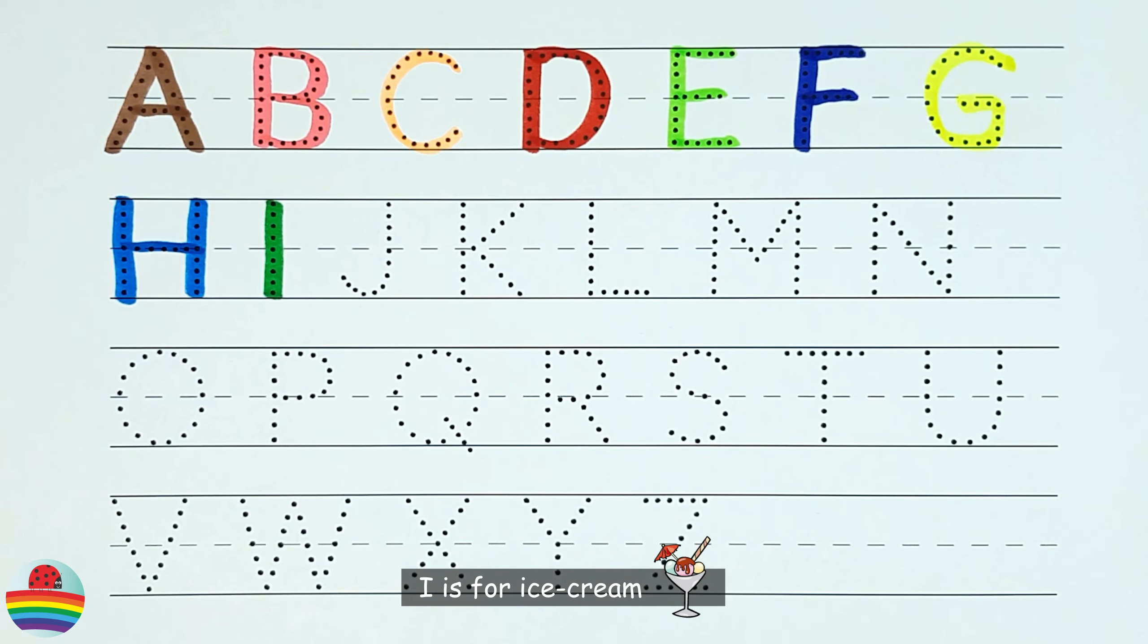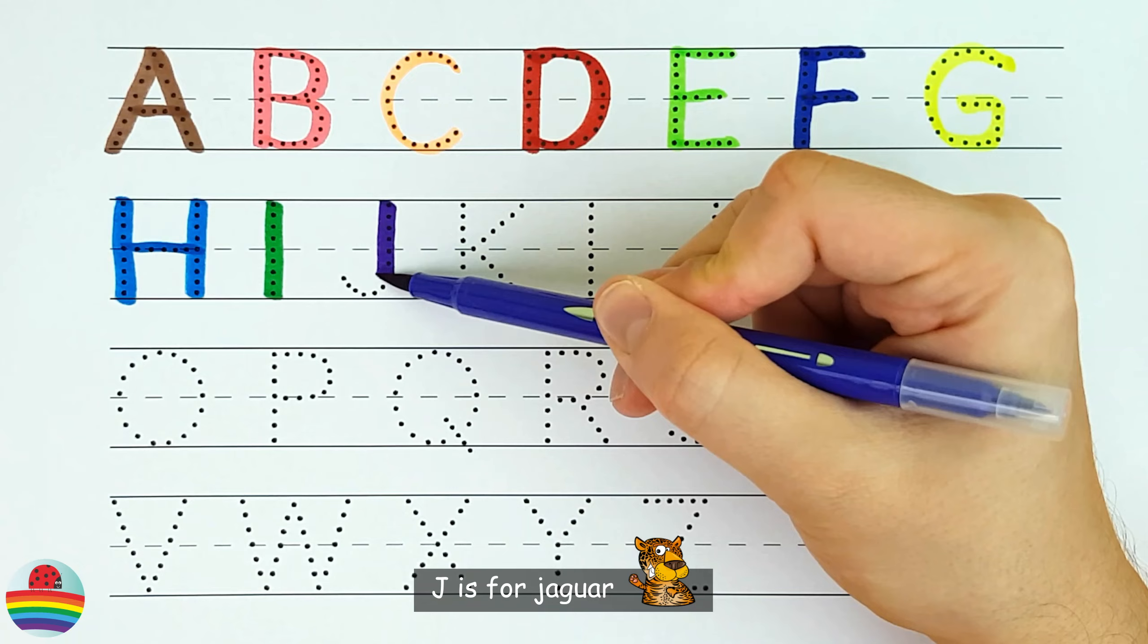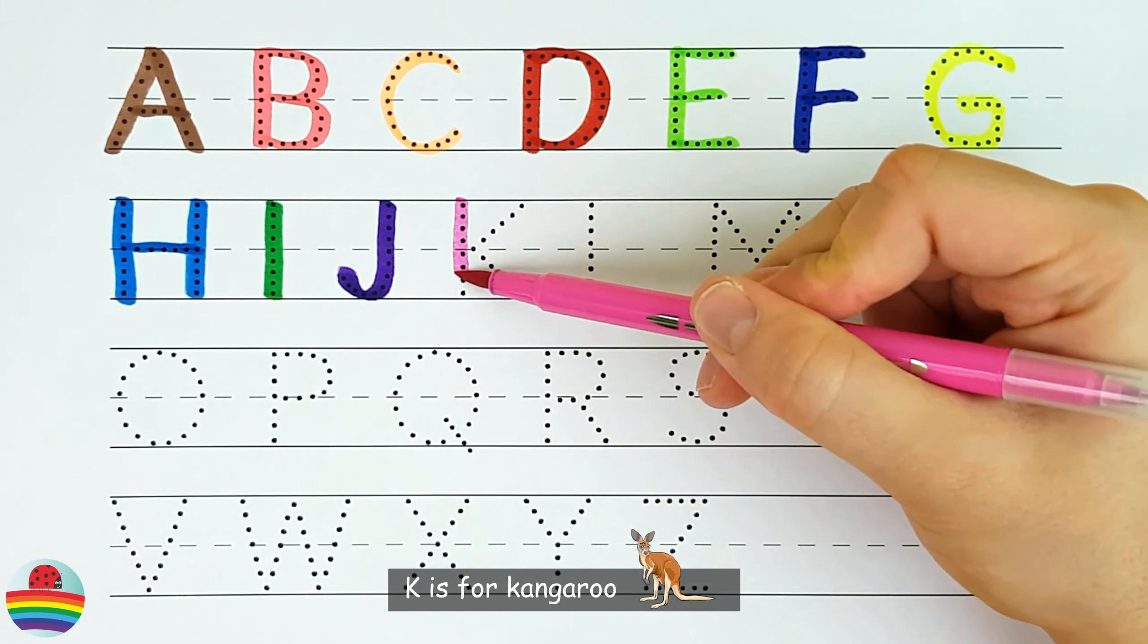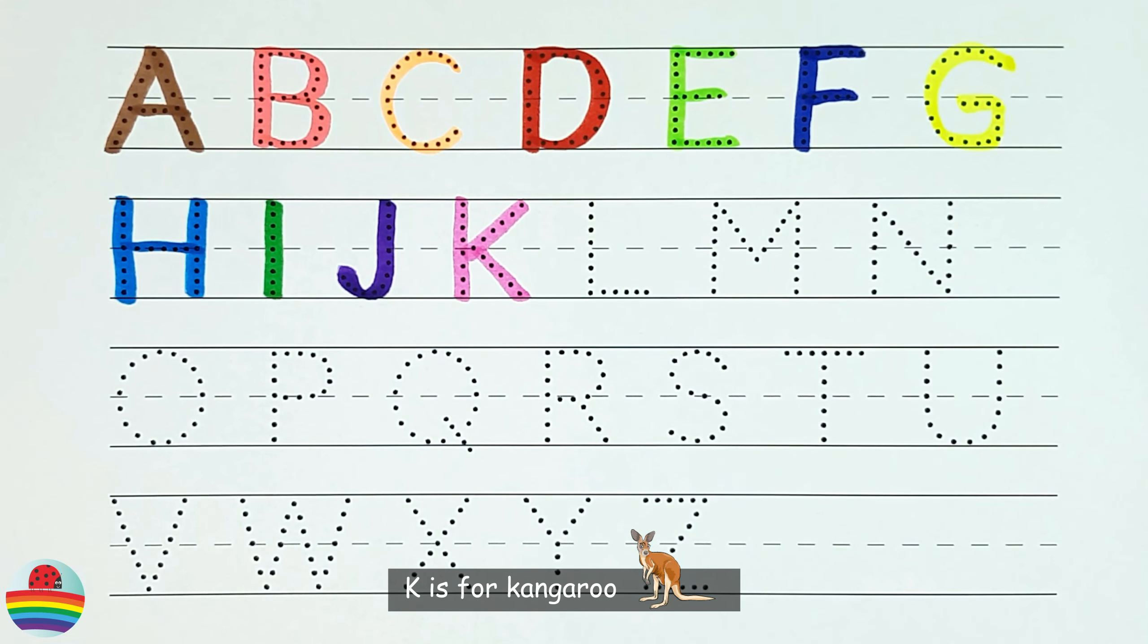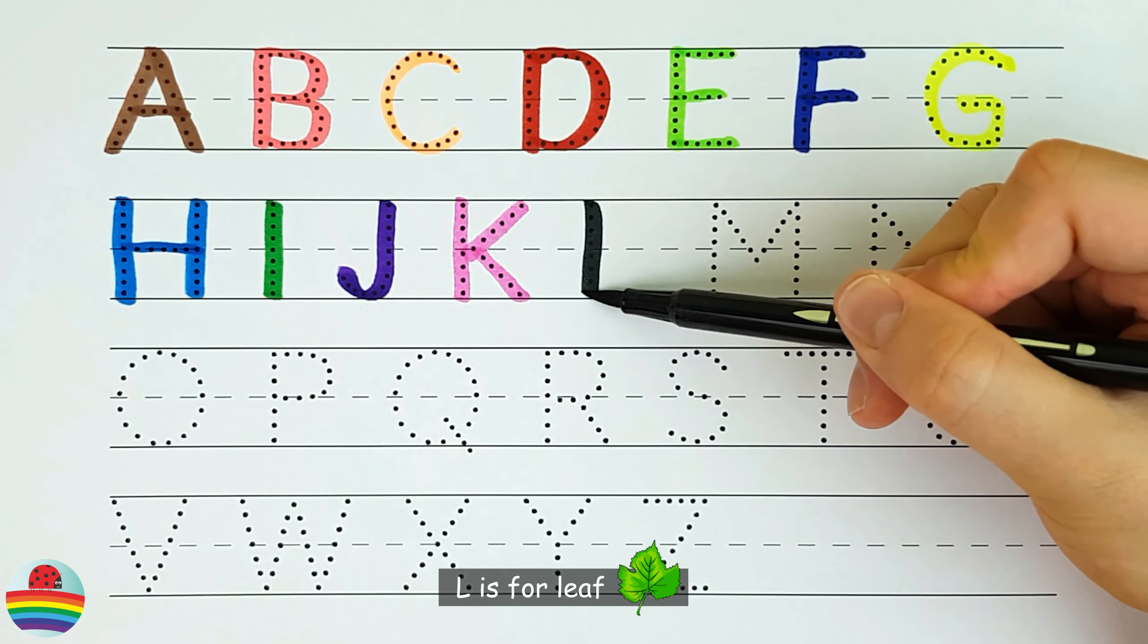I. I is for Ice Cream. J. J is for Jaguar. K. K is for Kangaroo. L. L is for Leaf.